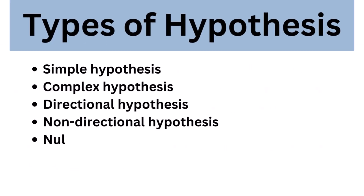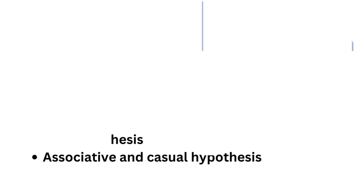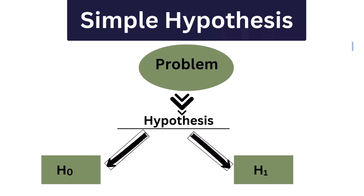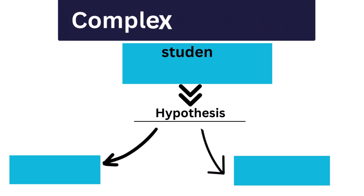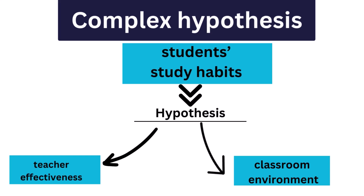There are six forms of hypothesis. One, simple hypothesis: it shows a relationship between one dependent variable and a single independent variable. For example, if you eat more vegetables, you will lose weight faster. Here, eating more vegetables is an independent variable. Two, complex hypothesis: it shows the relationship between two or more dependent variables and two or more independent variables. For example, eating more vegetables and fruits leads to weight loss, glowing skin, and reduces the risk of many diseases such as heart disease.